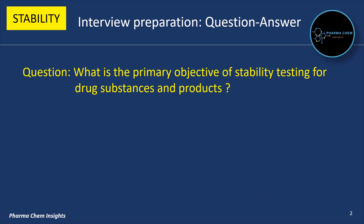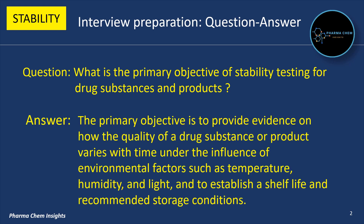First question: What is the primary objective of stability testing for drug substances and products? The primary objective is to provide evidence on how the quality of a drug substance or product varies with time under the influence of environmental factors such as temperature, humidity, and light, and to establish a shelf life and recommended storage conditions.